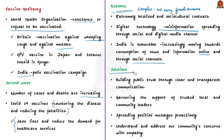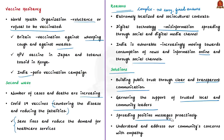Building public trust through clear and transparent communication is an important measure to counter vaccine hesitancy. This can be done by equipping healthcare professionals and frontline workers with accurate information so that they can counter misinformation. Garnering the support of trusted local and community leaders can also build credibility of vaccines. The author also suggests spreading positive messages proactively in the community and on social platforms, as this has reduced vaccine hesitancy in other countries.